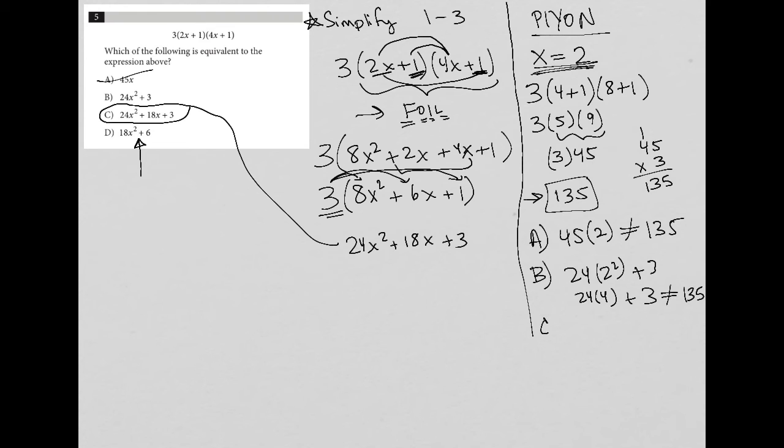And then choice C, we have 24 times two squared plus 18 times two, plus three. And that one once again, you do the math on the side. So this would be 24 times four, plus 18 times two, plus three, let's just do this one.